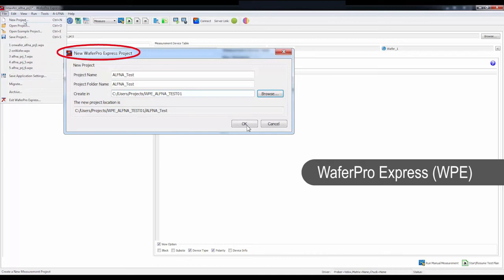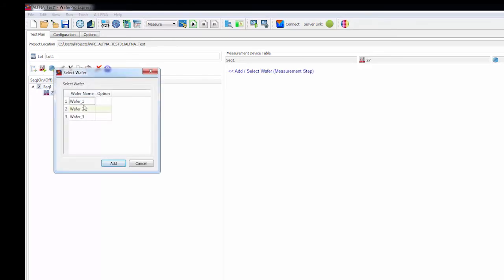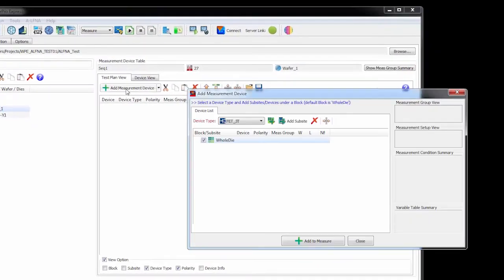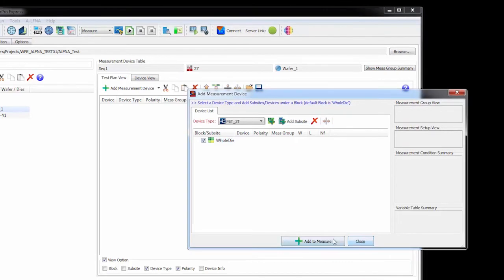Here, we have a new WPE ALFNA project. We add a sequence, temperature, and wafer, and then specify the subsite and home location.